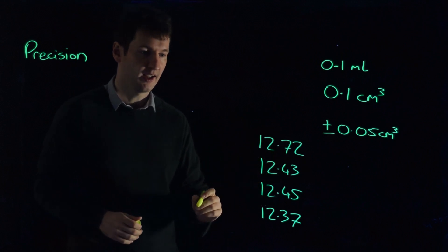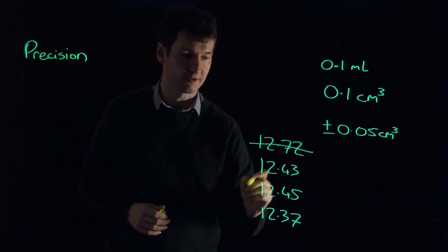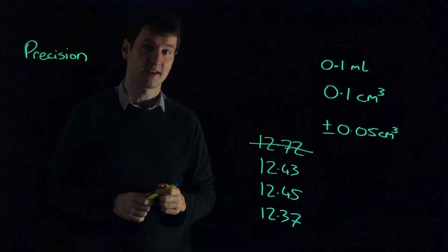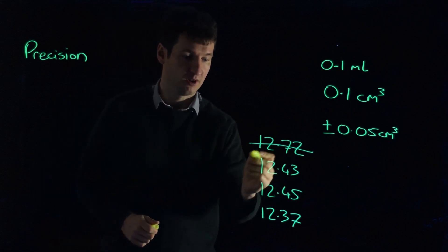Well, as a matter of course, we discard the first one because we know that it was just a rough titration. We're trying to establish roughly where the end point was. Now, if we take the lowest value here, 12.37 away from 12.45.